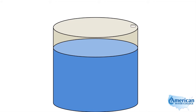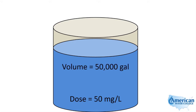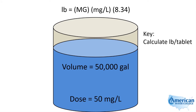Another type of chemical dose problem is where you'll have calcium hypochlorite or tabs that are added to a tank. After adding a tab or so many tabs, you end up with a certain concentration — in this case, we'll call it 50 milligrams per liter. So we added enough solid chlorine tablets to give us 50 milligrams per liter, with some volume — call it 50,000 gallons. We'll use the formula to calculate the total pounds. Pounds equals the volume in million gallons times the dose in milligrams per liter times 8.34. The key to solving this type of problem is to calculate how many pounds of chlorine are added per tablet.